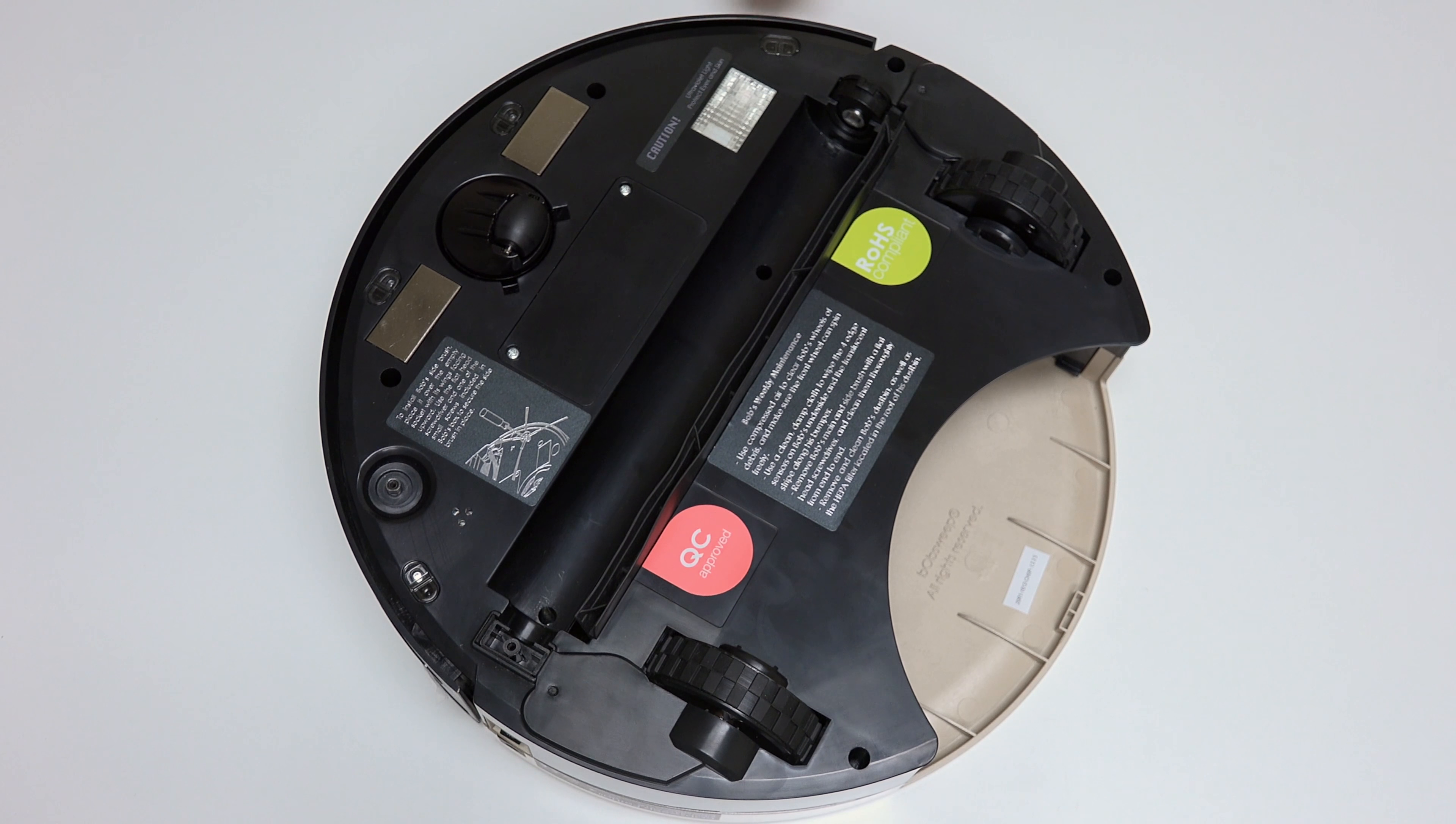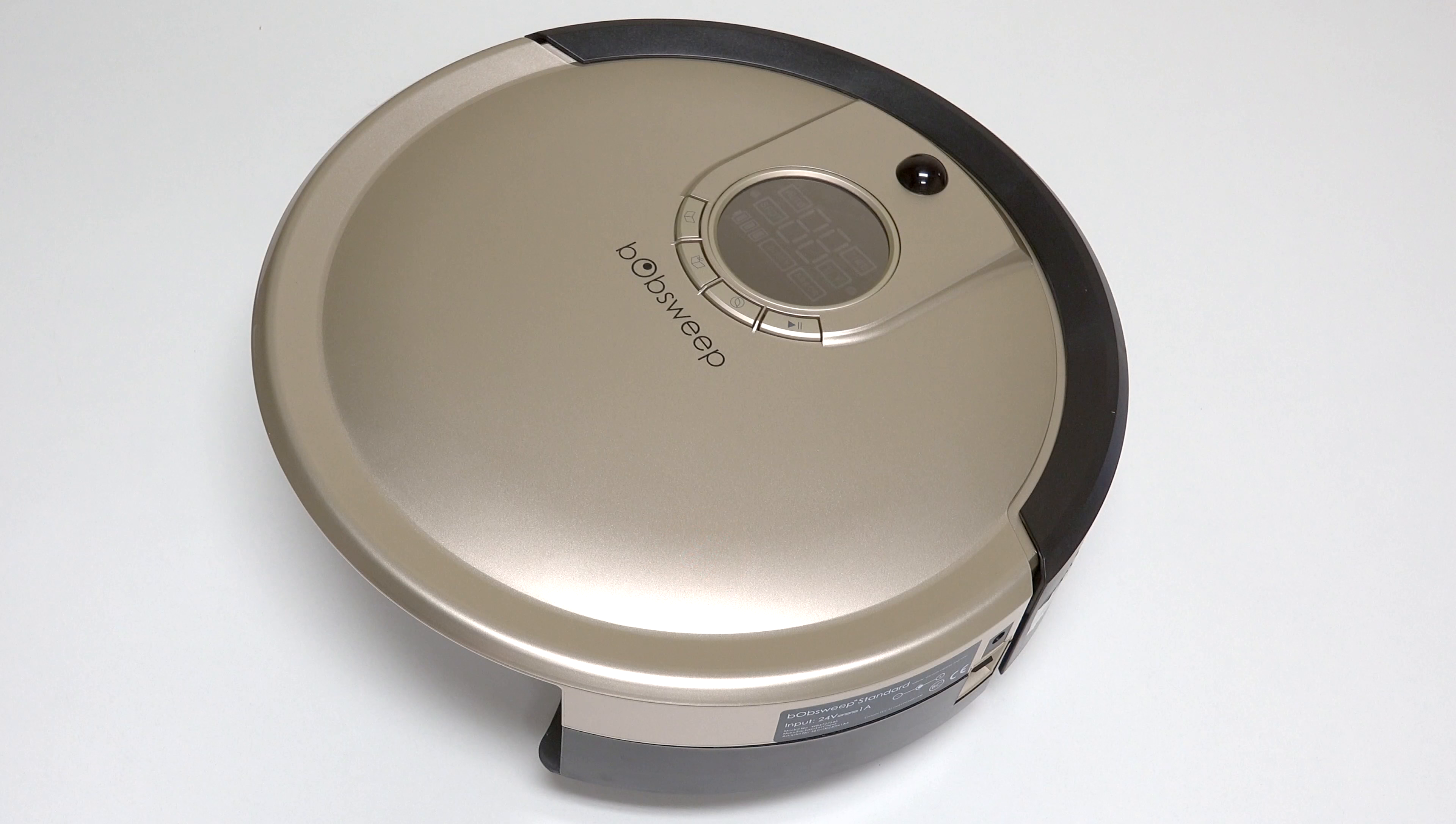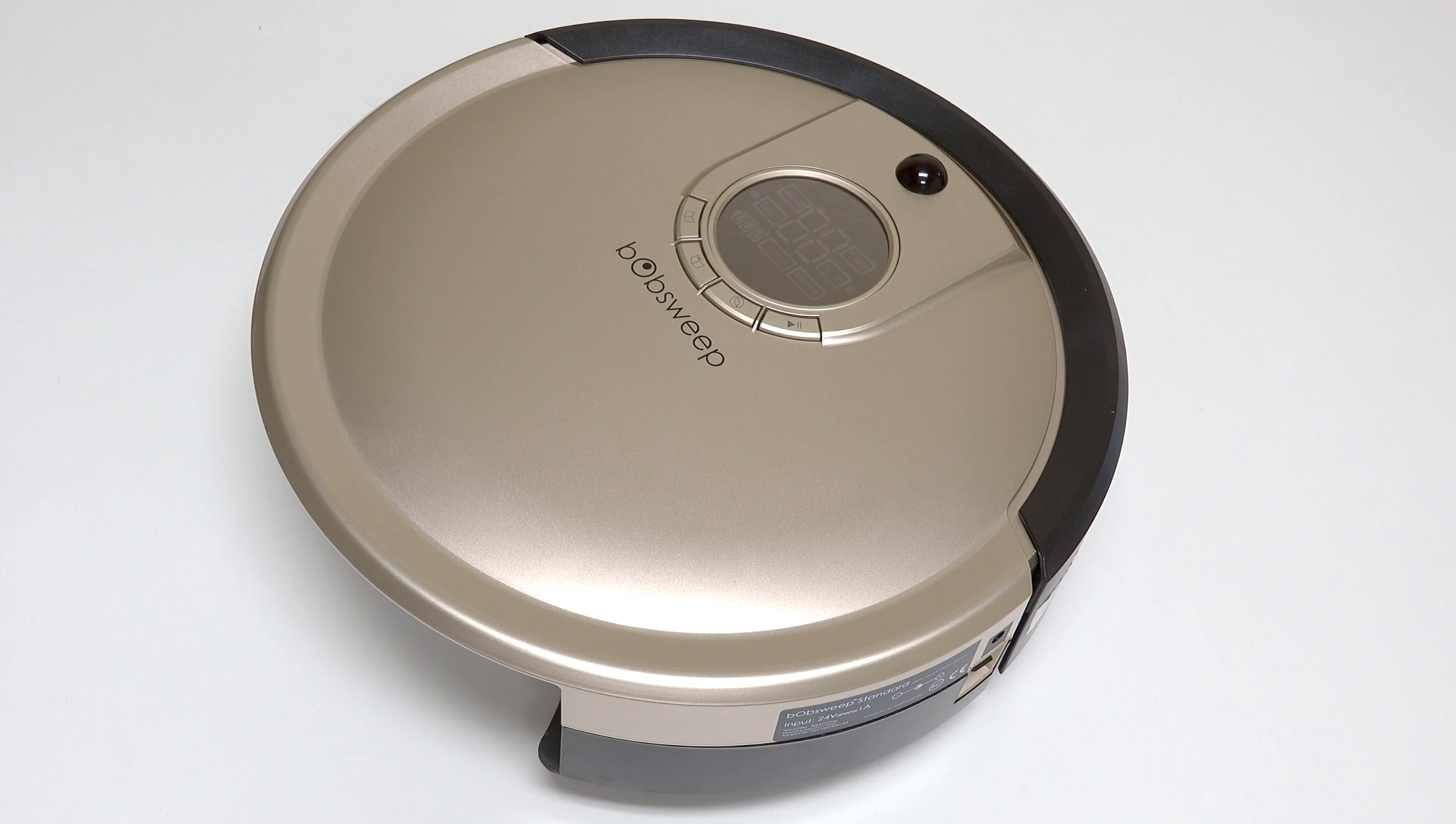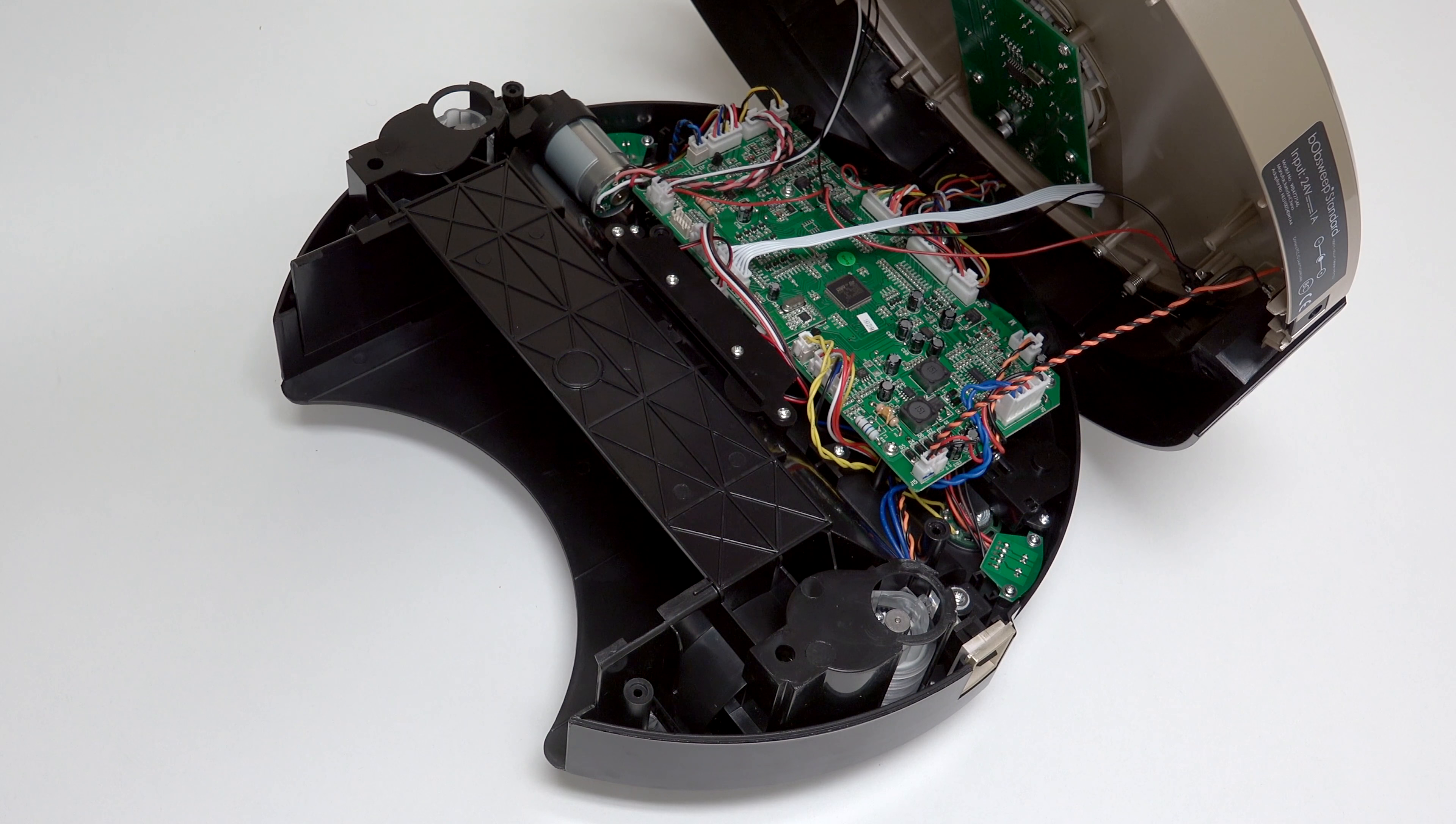Bob's cover is no longer secured, so hold the top and bottom together as you carefully flip him back onto his wheels. Grip Bob's cover from the back and lift up to expose the mainboard.